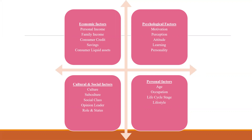If disposable income is more, more will be the spending. In the reverse scenario, if disposable income is less, then spending will also be less. Coming to discretionary income, that is the income which is left after fulfilling your basic needs — whatever amount of money is left, you can spend on other things. If you have higher discretionary income, there is a great chance that you will be spending the money on enhancing your standard of living, and in the reverse scenario, you will not enhance your living standard.